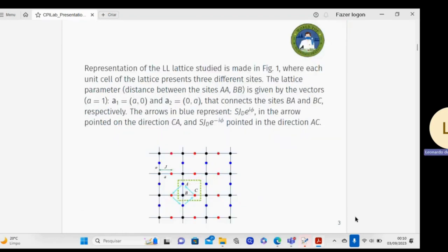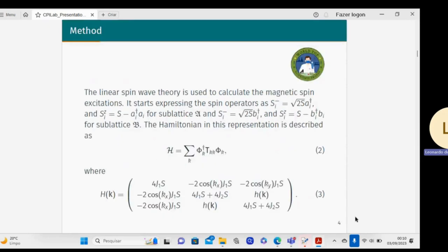The representation of the Lieb lattice I have is following the figure. I have three different kinds of sites, nominated as the color blue, red, and black, where the arrows represent the Dzyaloshinskii-Moriya pointing in the direction C-A and pointing in the direction A-C on the fiber.